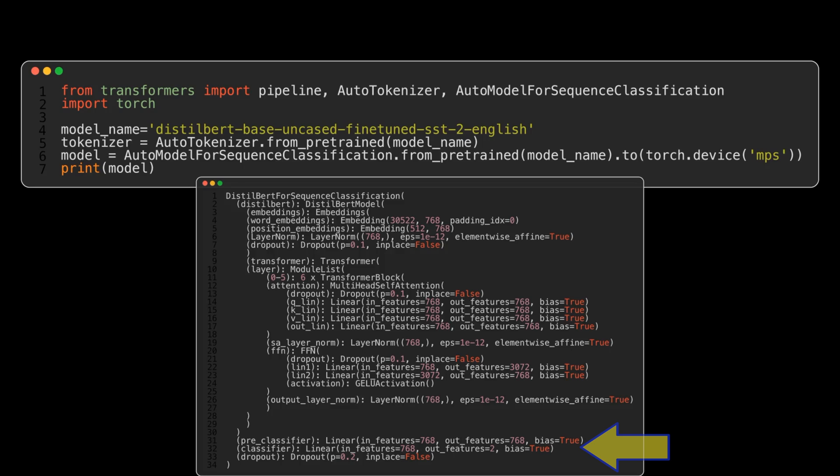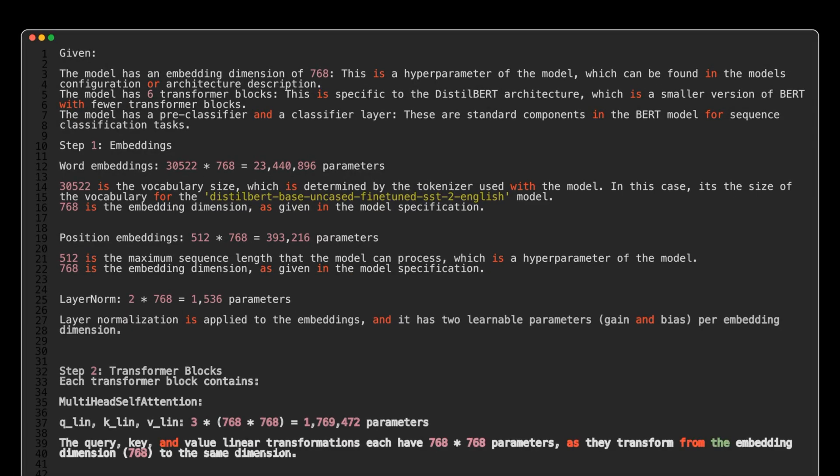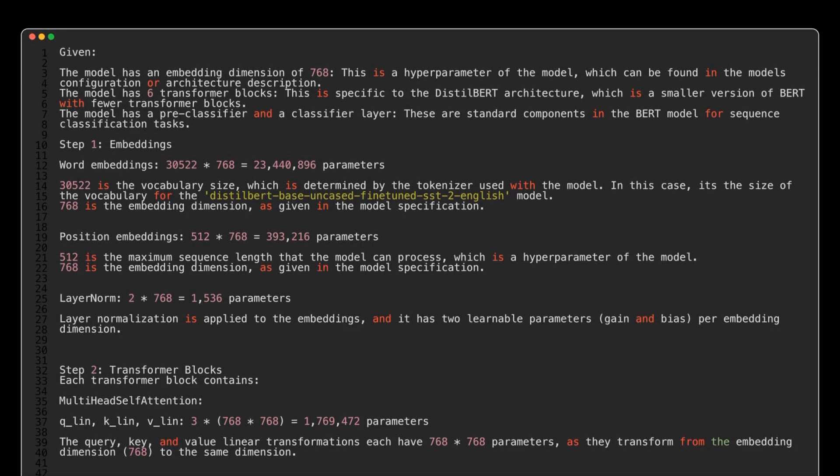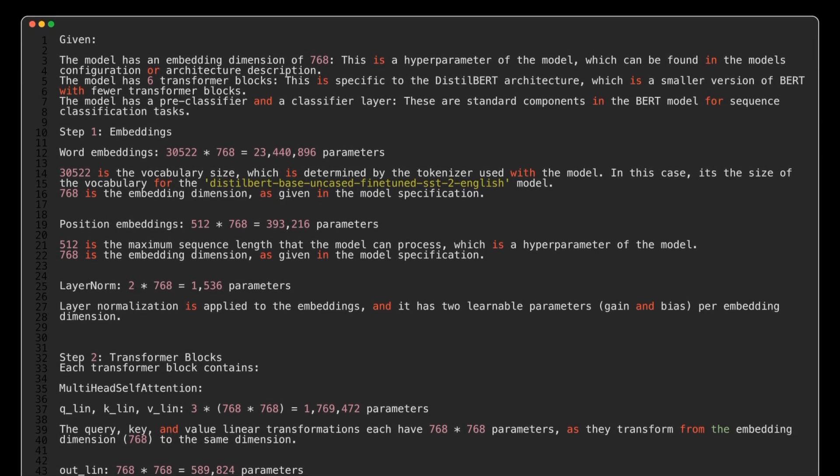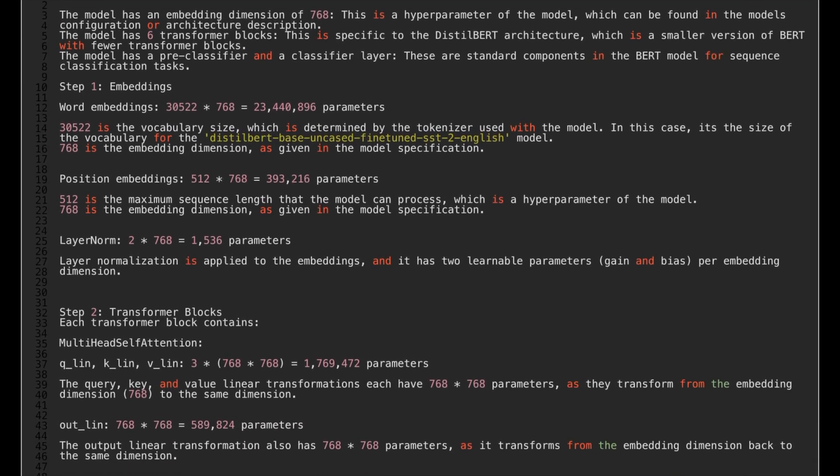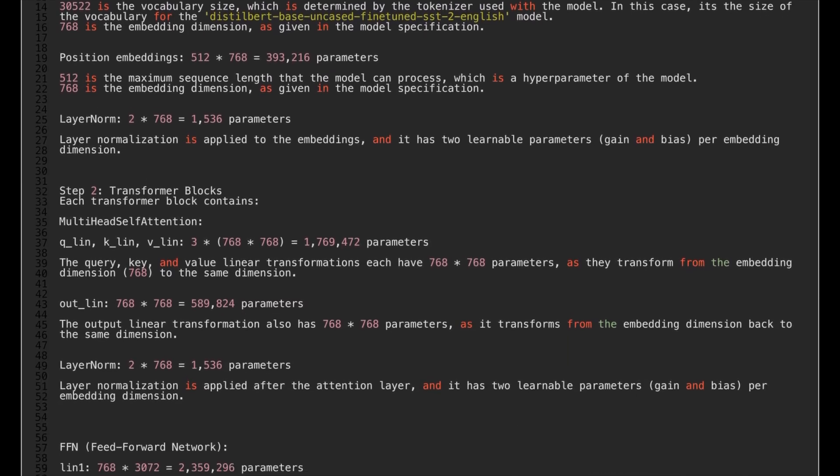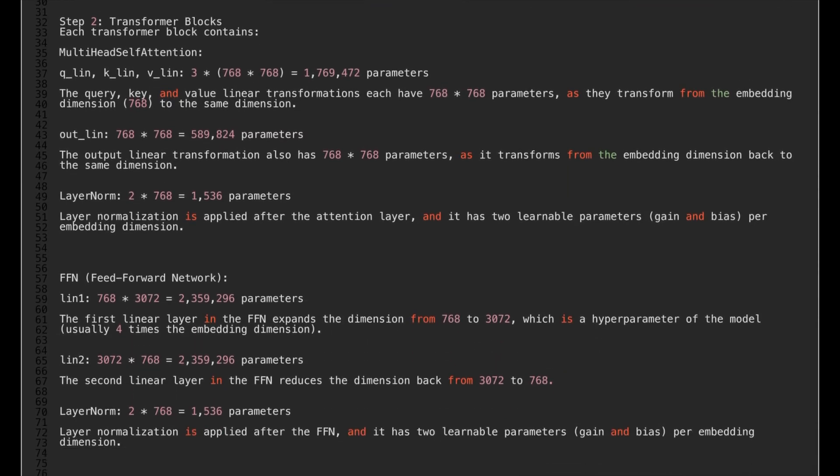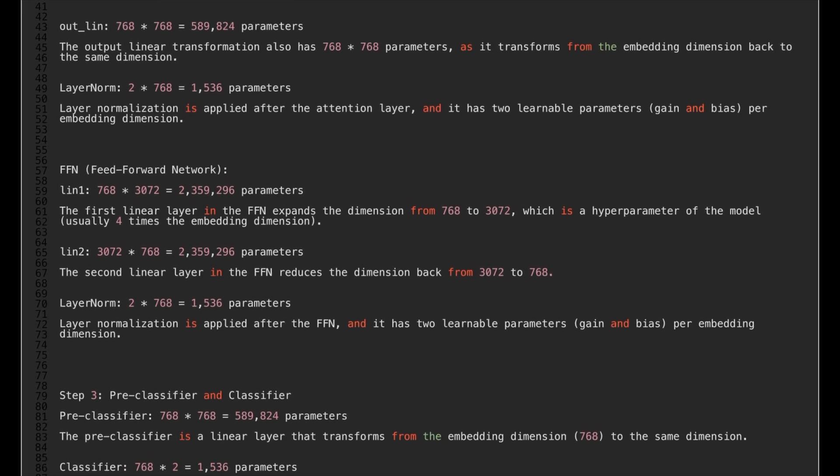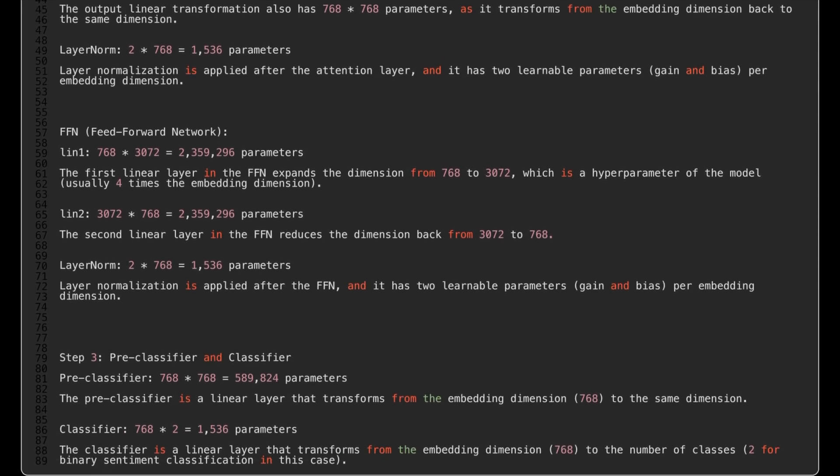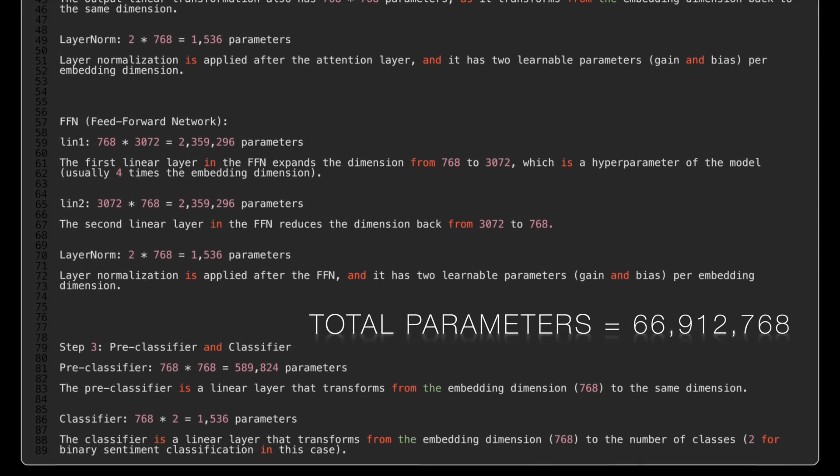Now here's my calculation for the number of parameters in the network. I won't go through the calculation now, but for those interested, please feel free to pause and rewind the video to check my working. The result of this, if I'm correct, is that the DistilBERT model has just over 66.1 million parameters.